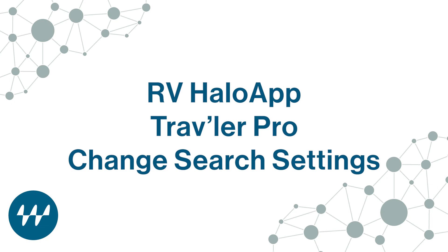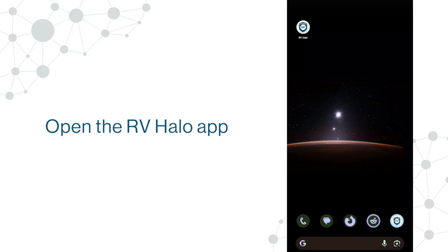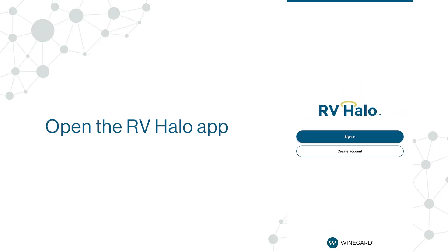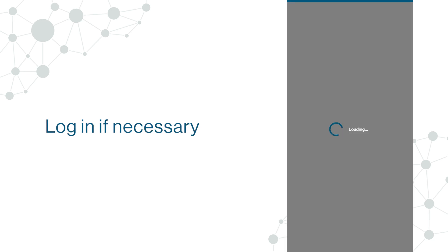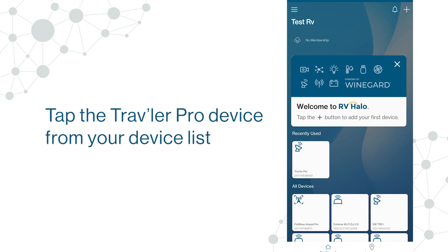RV Halo app, Traveler Pro, change search settings. Open the RV Halo app. Log in if necessary. Tap the Traveler Pro device from your device list.